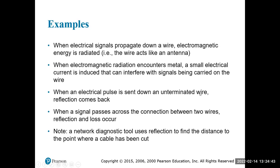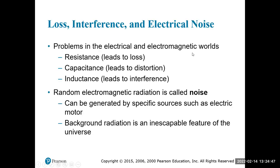Random electromagnetic radiation is called noise. True story: I used to work healthcare technology at a hospital, and they had an x-ray machine. Every time the x-ray machine fired off, it pulled 50 amps of electricity — a huge amount in a short period of time — generating a very large electromagnetic field. Every time the x-ray machine fired, the data on the network in nearby screens would fail. All we had to do was put a metal plate between the x-ray machine and the network switch, and everything stopped.